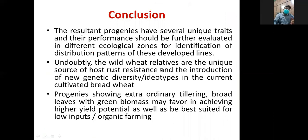To conclude, wild wheat relatives are a unique source of resistance and the introduction of genetic diversity. In the future, we will try to test all these progeny lines in different environments for their adaptability. The SSR markers in the existing gene pool will be used for achieving high yield potential, as well as identifying lines best suited for low-input organic farming. Thank you all for listening. Goodbye.